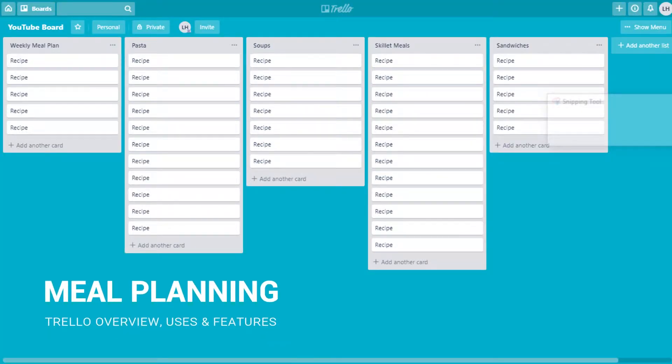Meal planning. So this is a list board with each card containing a recipe. The cards can contain images, links, and ingredient lists. Individual recipes can be organized by type and then pulled together to create a weekly meal plan.